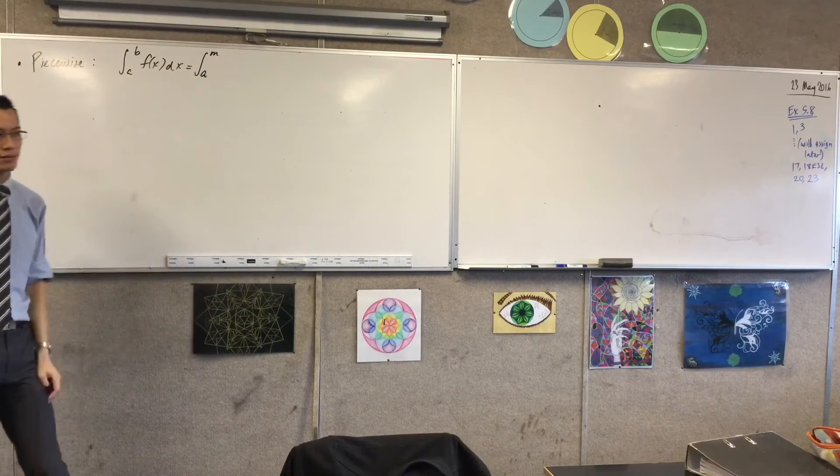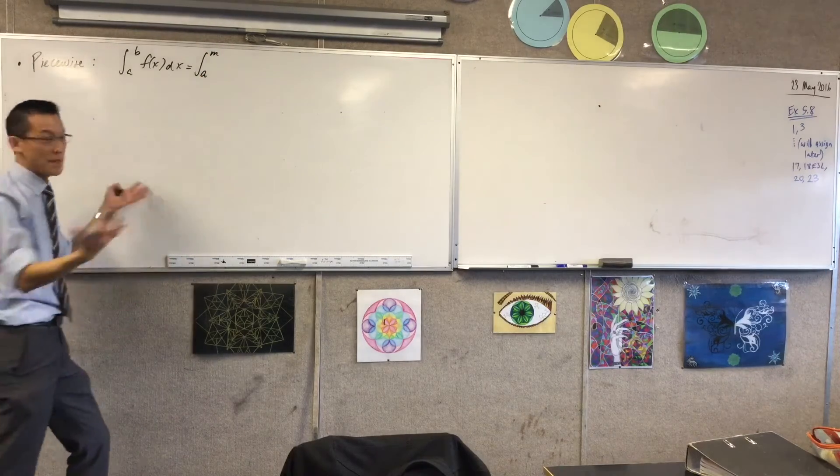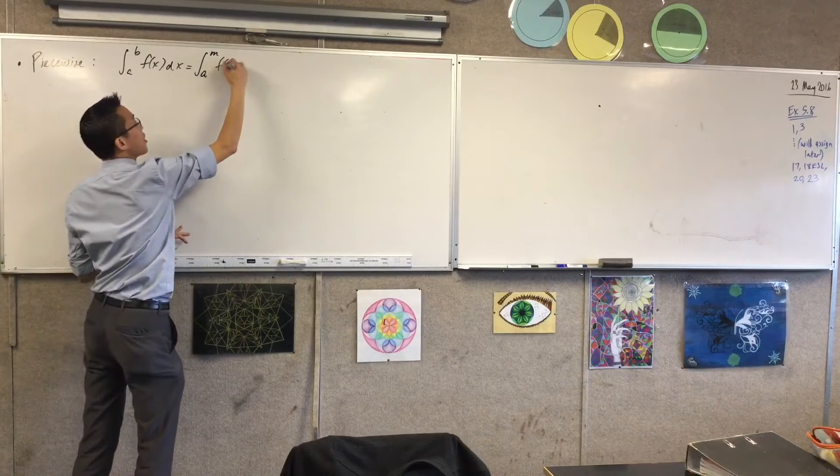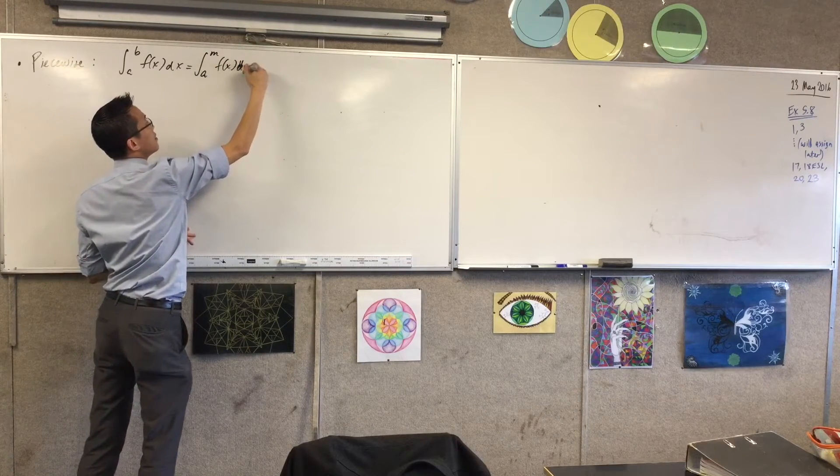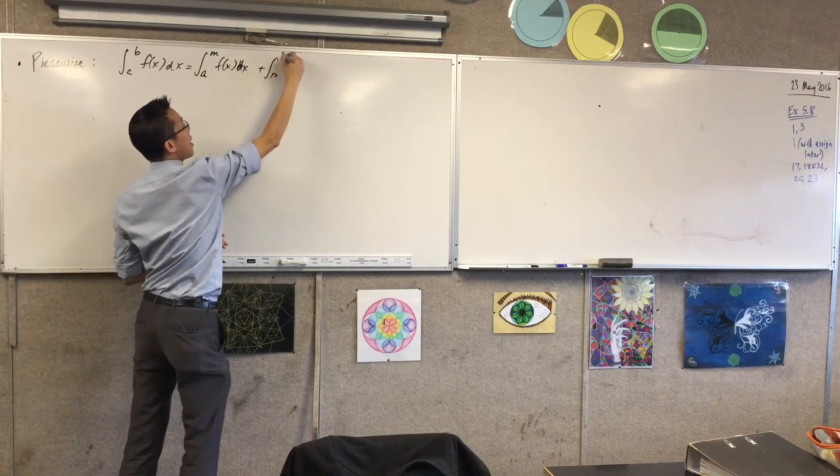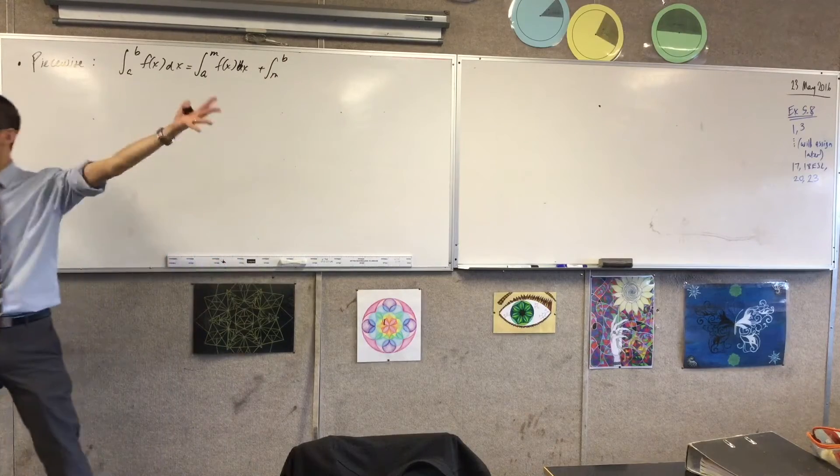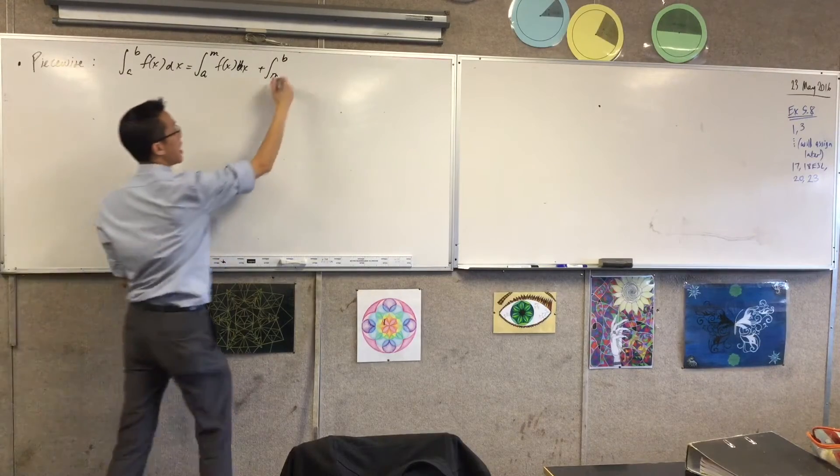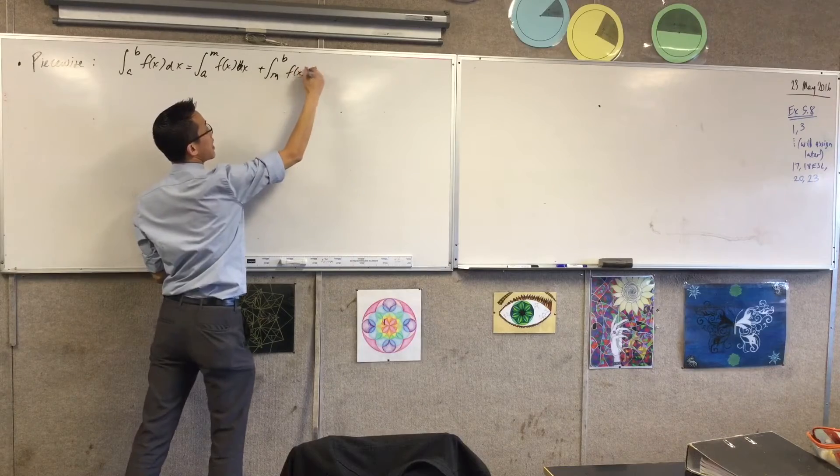So I'm going to state that like this. I am going to call it m for, like, middle, midway, in between. Same function. And then you do the remainder, however much is left, up to the end. So that's an m to a b of the same function.